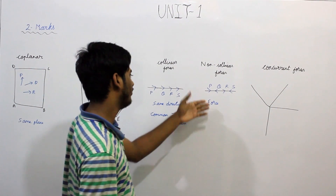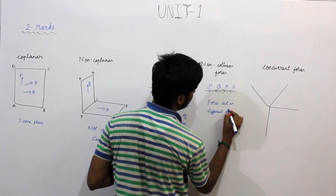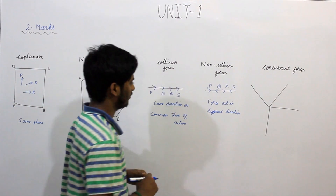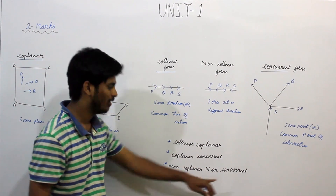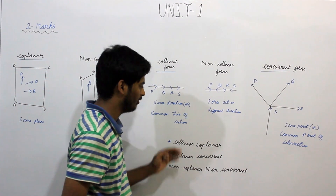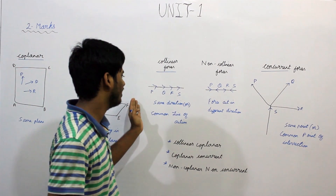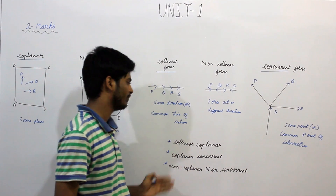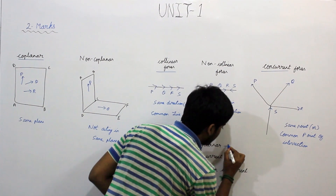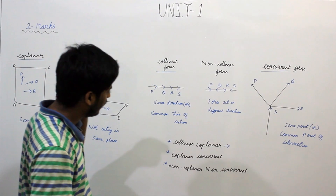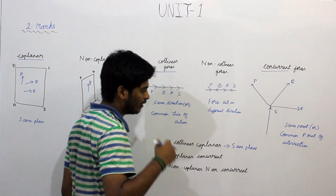These forces act in different directions. All forces which are acting in the same direction or which have a common line of action are collinear. Coplanar forces are forces which lie in the same plane. So collinear coplanar forces are those which lie in the same plane and also have a common line of action — same plane and same direction.